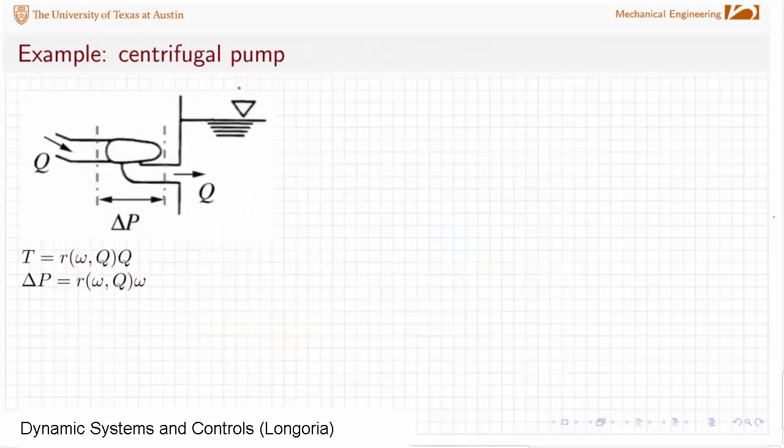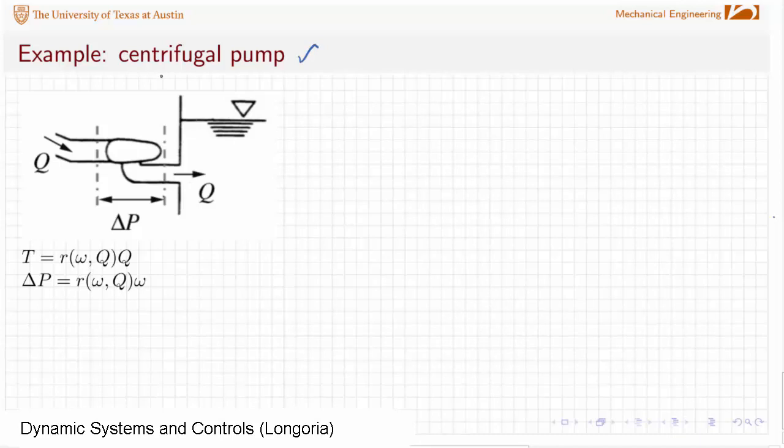Another type of modulated coupler is a centrifugal pump. And here I'm showing this pump here bringing in fluid into a reservoir. And from basic analysis of a dynamic type pump like this, it shows that you have actually a complex relationship between an effort and a flow here.